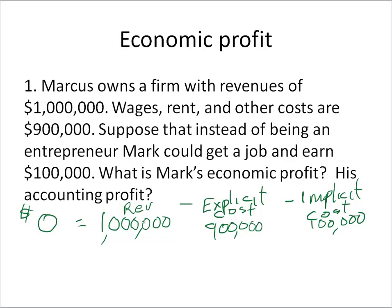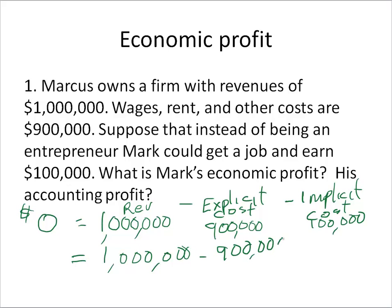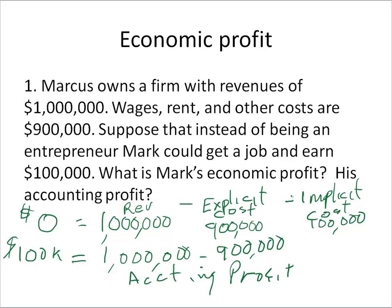For accounting profit, we have the million and the explicit costs, but we don't count the money you don't receive — so we leave off the implicit cost. Accounting profit is 1,000,000 minus 900,000 equals 100,000. For the rest of this chapter we'll assume economic profits, so that 100,000 is accounting profit, and zero is economic profit.